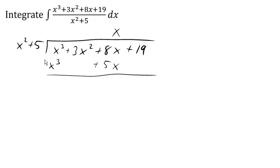And now we're going to subtract this entire line from the previous. So x cubed minus x cubed is 0. 3x squared minus nothing is 3x squared. 8x minus 5x is 3x. And then we'll bring down the 19. So now we want to ask, what times x squared gives me 3x squared? And that'd be a 3. So 3 times x squared is 3x squared. 3 times 5 is 15.